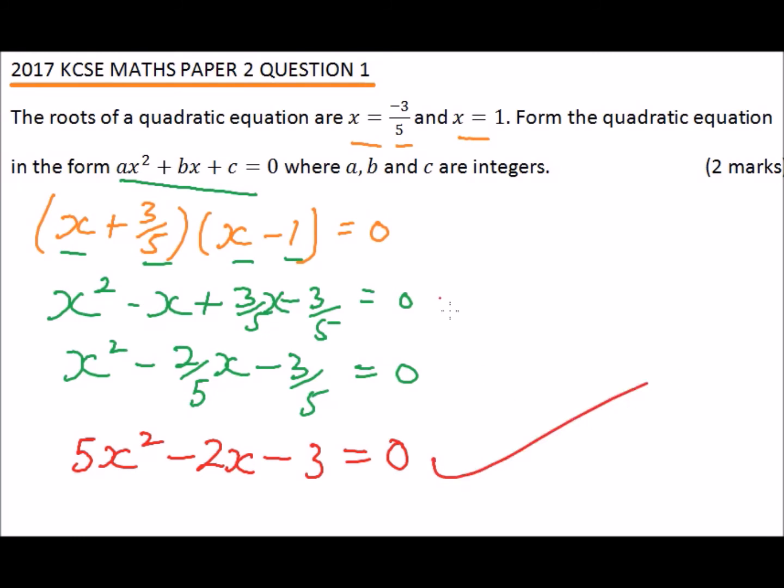So that is our equation in the form ax squared plus bx plus c, where our a is 5, our b is minus 2, and our c is minus 3.